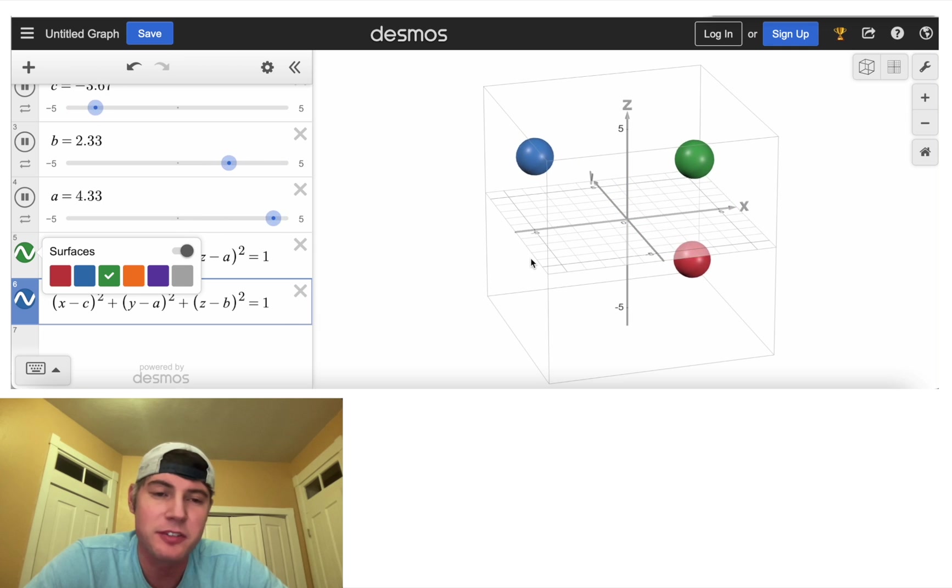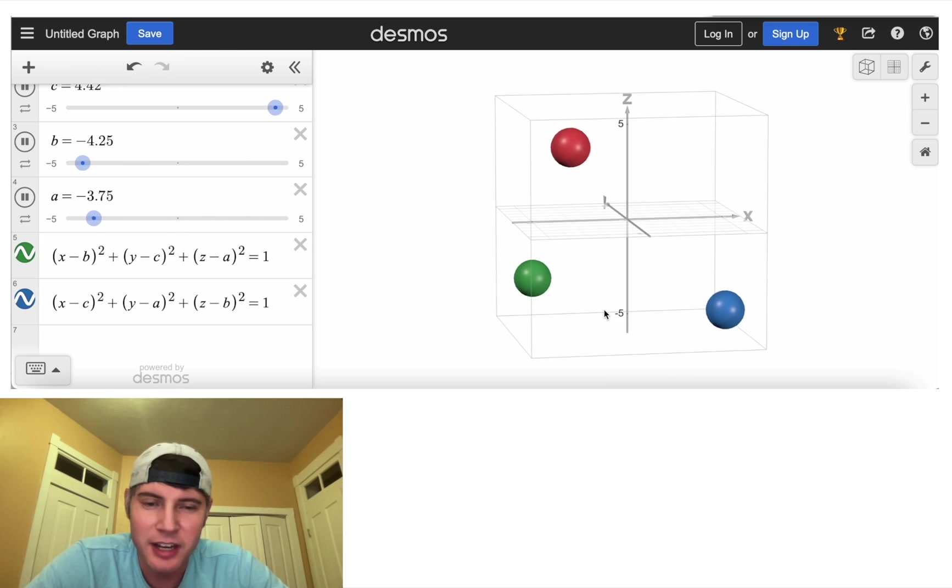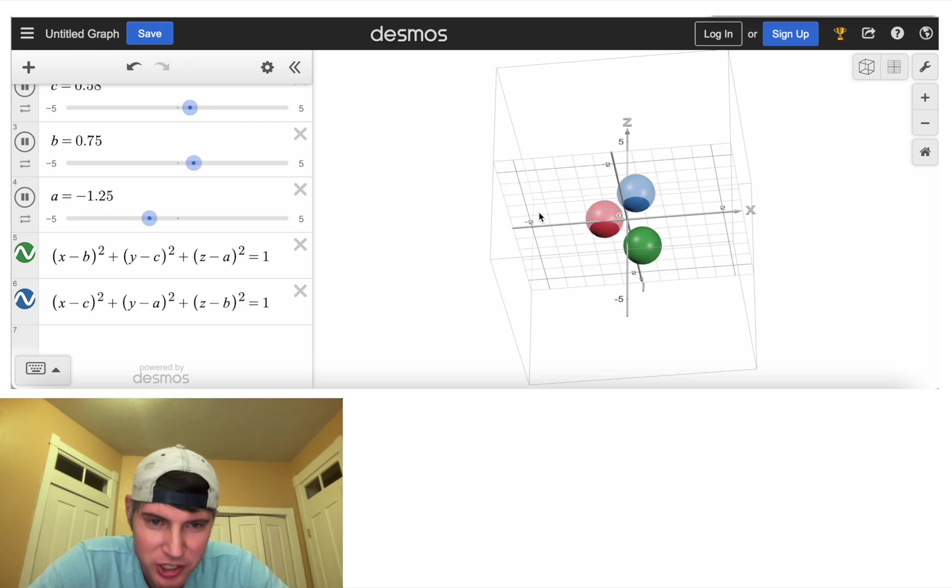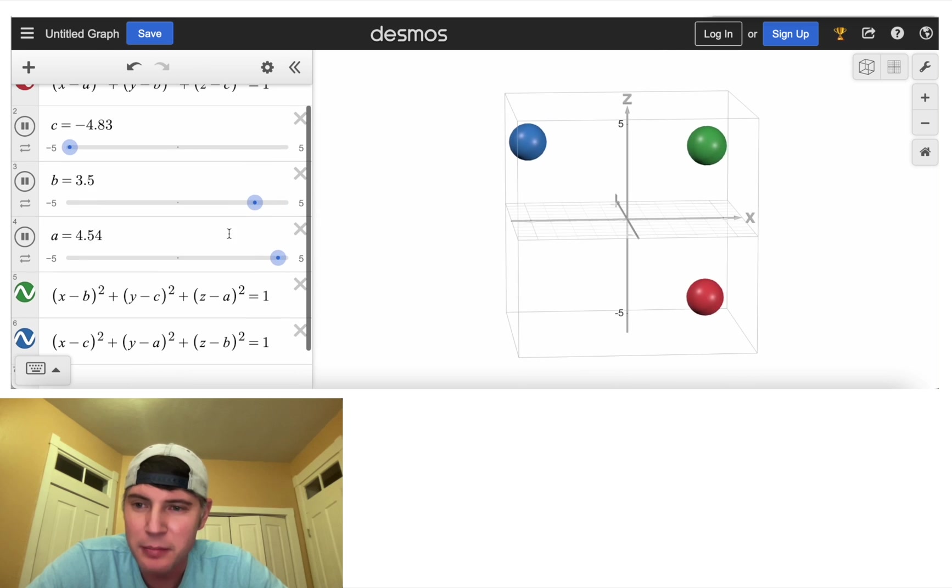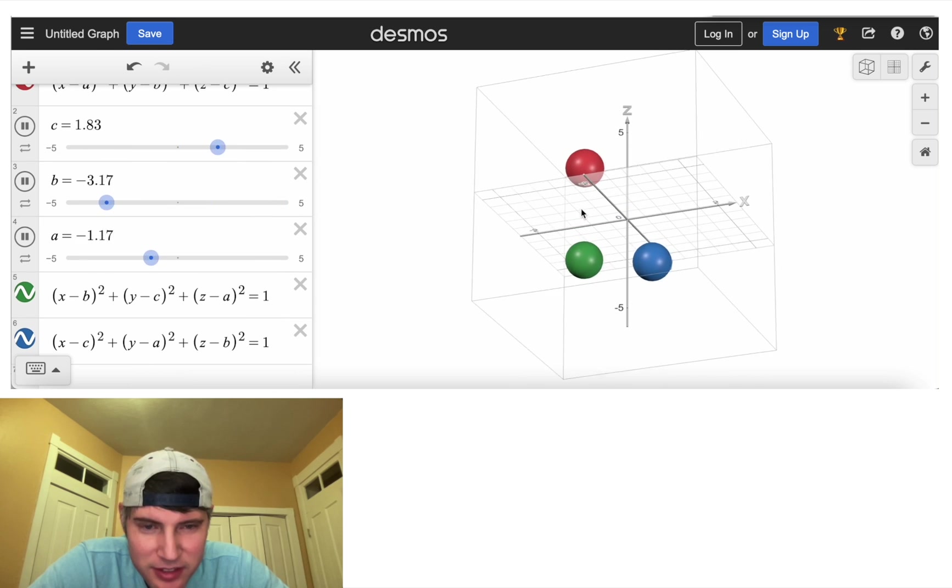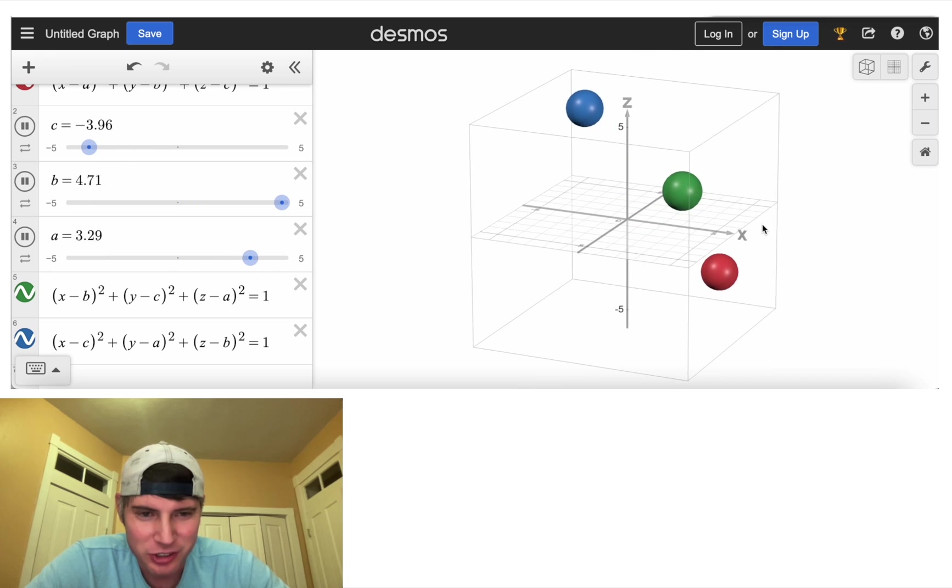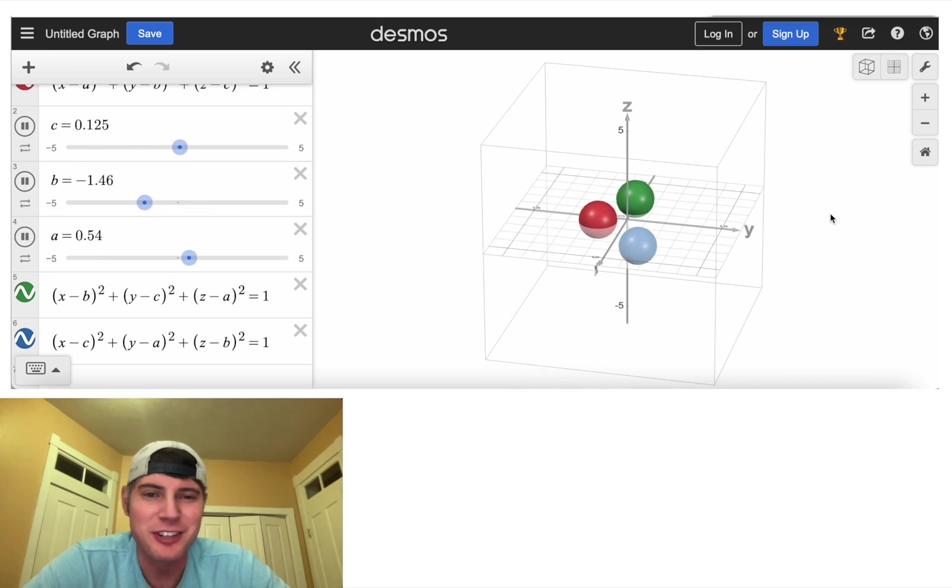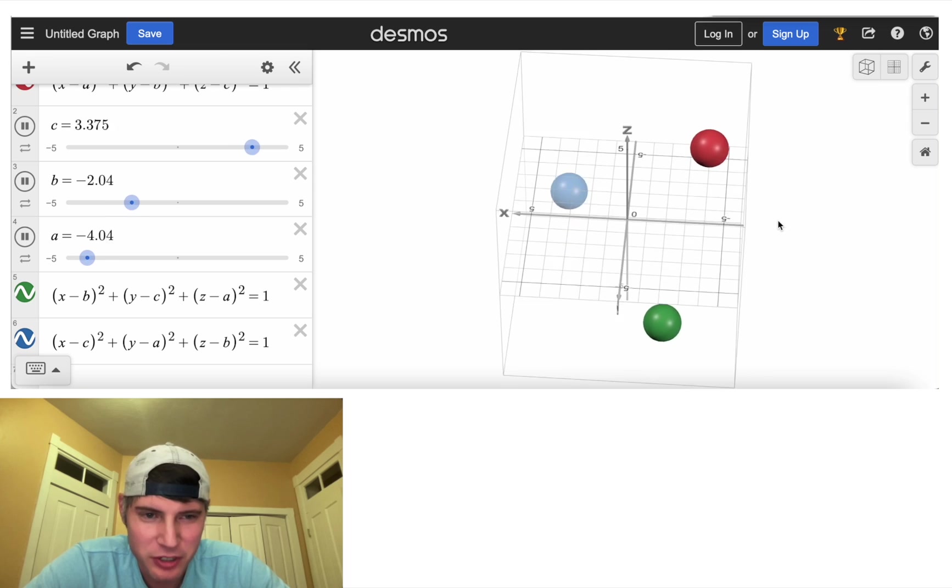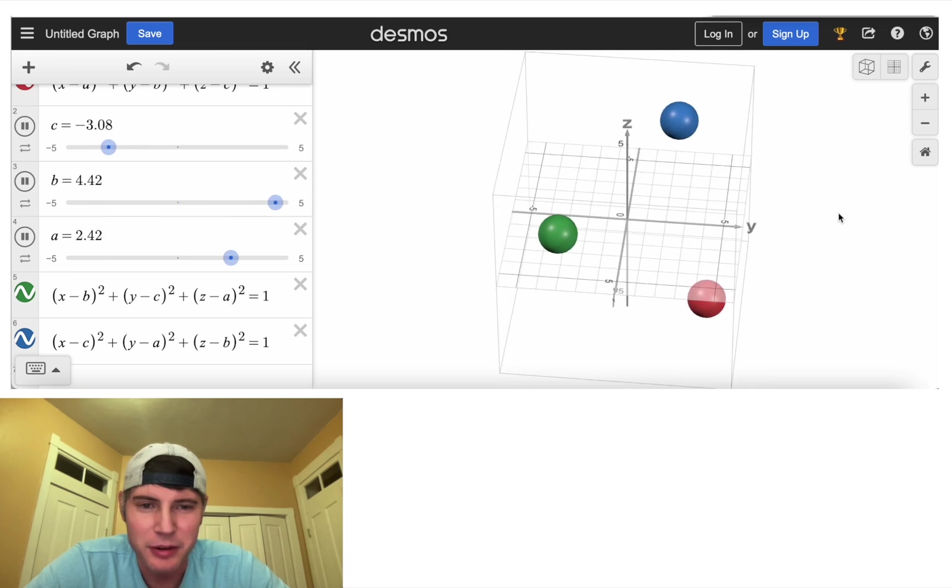So now we have the three balls all bouncing around in there. They're not independent. They all kind of depend on each other because they're all based on A, B, and C. So they kind of have this symmetric looking pattern, which is kind of fun. And you can also give it a little spin, and it'll just spin on its own. Kind of a fun Desmos feature. If you click and then rotate, you can play around with that too.